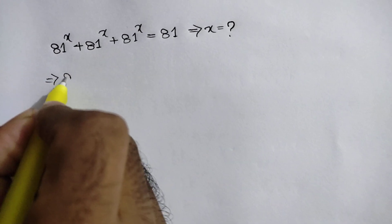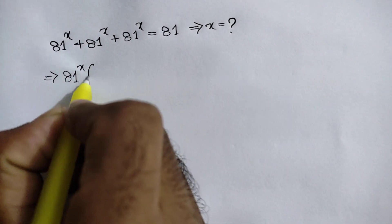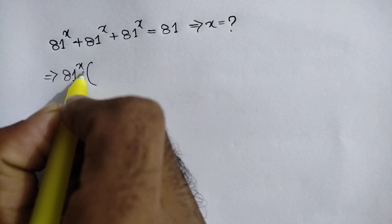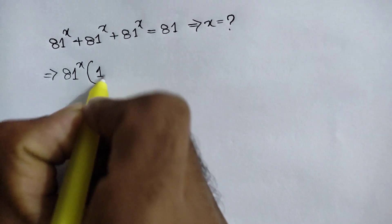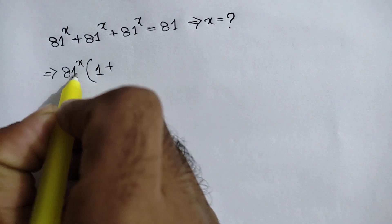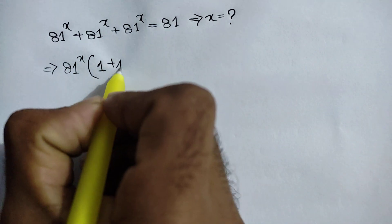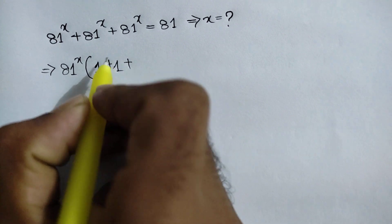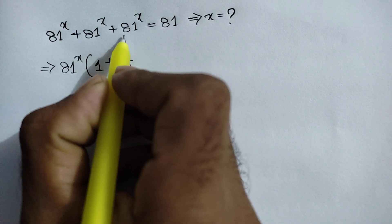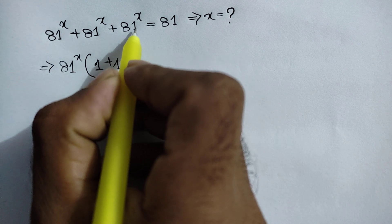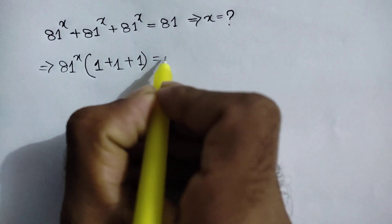We take out 81 to the power x as a common factor. Inside the bracket, each term of 81^x divided by 81^x equals 1, giving us 1 plus 1 plus 1. So the bracket equals 3, and we have 81 to the power x times 3 equals 81.